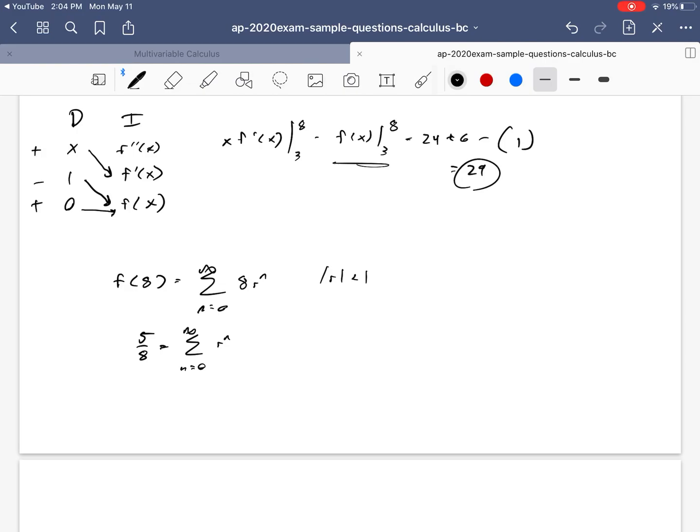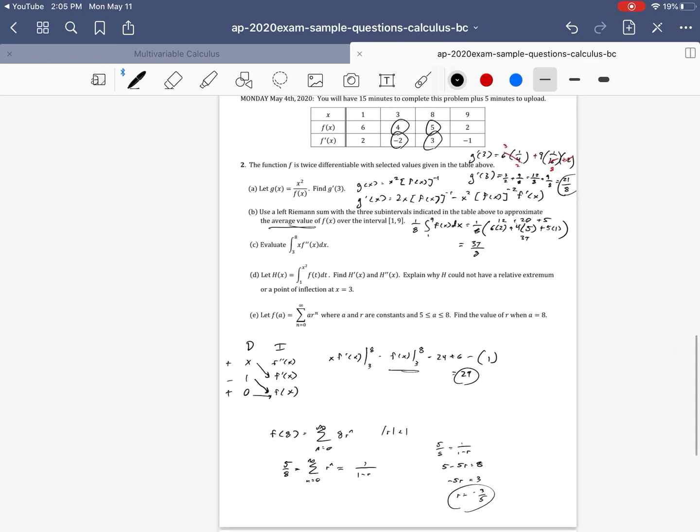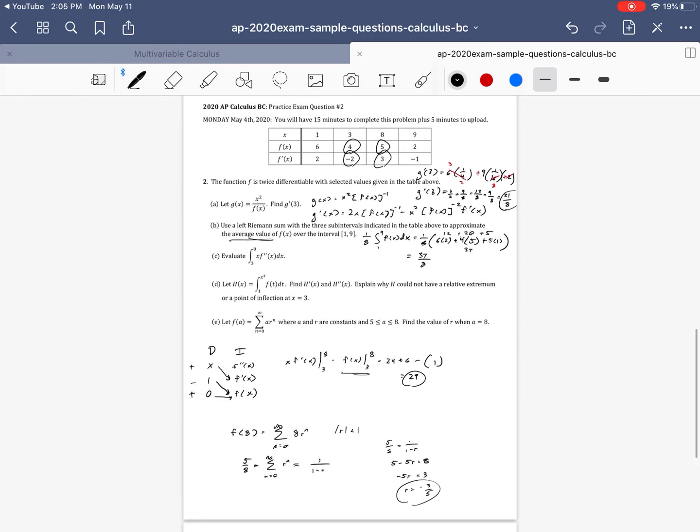Okay. Now notice the only way for this thing to converge to a number is if the absolute value of r is less than 1. It forms a geometric converging infinite series. So what this means is that this sum is also equal to 1 over 1 minus r. Why? Because r is the common ratio. And the first term is what you get when you let n equal 0 and r to the 0 is 1. So now it just comes down to solving 5 eighths is equal to 1 over 1 minus r. And so that gives us 5 minus 5r is equal to 8. And so negative 5r is equal to 3. And then r is negative 3 fifths. And that takes care of part e.